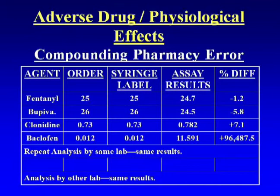The analysis results showed that fentanyl and bupivacaine were pretty close to ordered amounts, and clonidine was reasonable. But the baclofen showed a 96,000-plus percent difference between what we ordered and what was actually prepared. We couldn't believe it, so we sent it to another lab. The original lab repeated the analysis and got the same results. The second independent lab also got the same results.